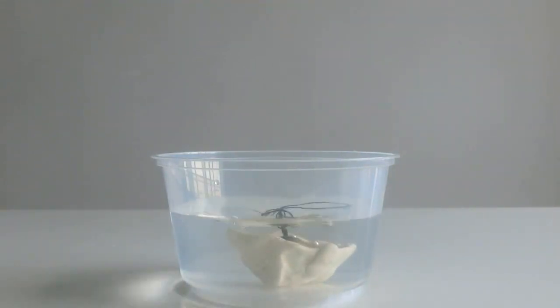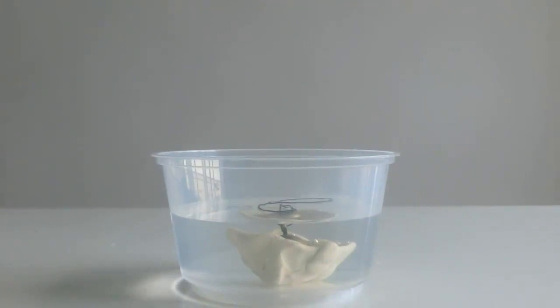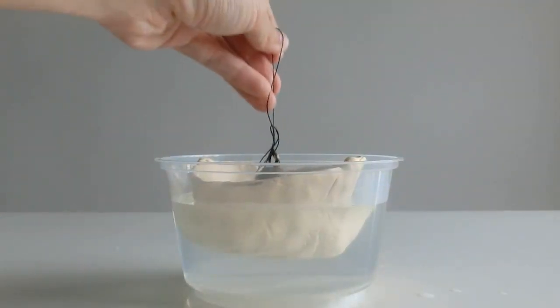This pendulum bob sinks the boat. To float the bob, the boat must displace more water. To displace more water, we need a bigger boat.